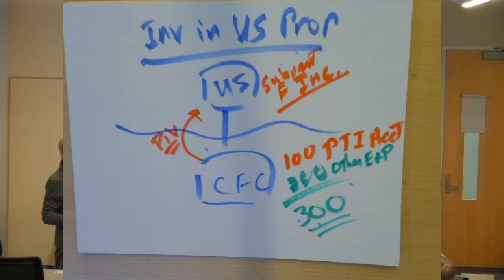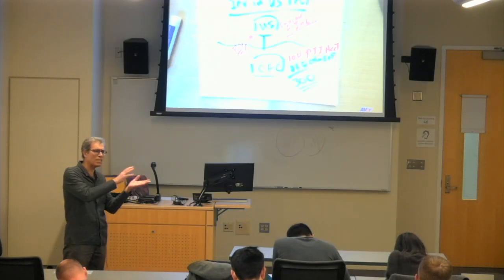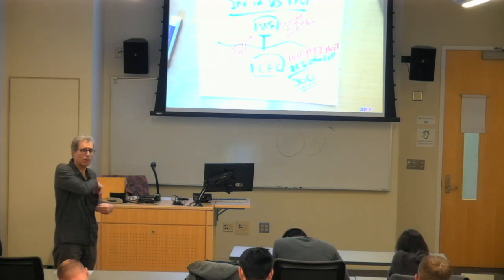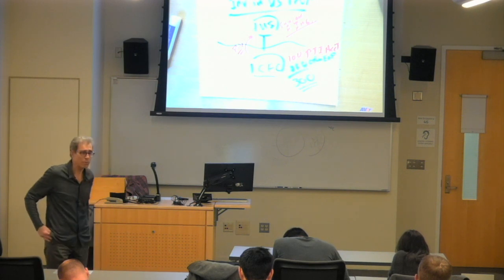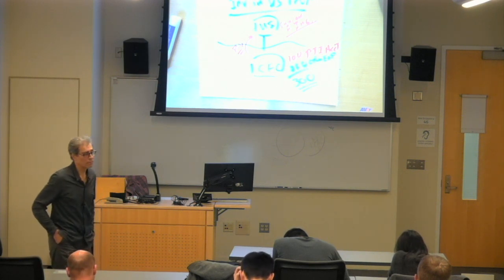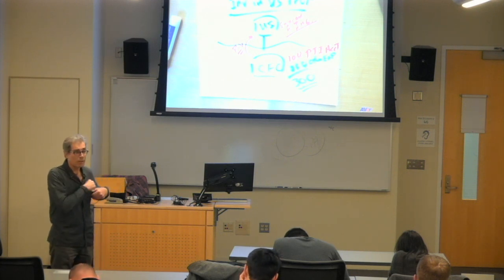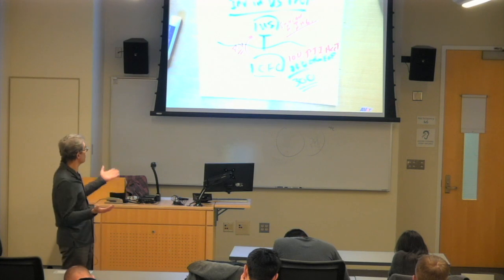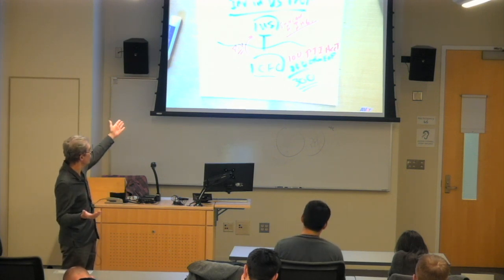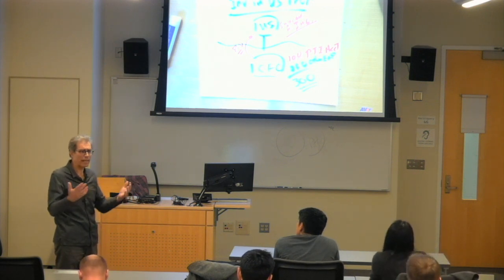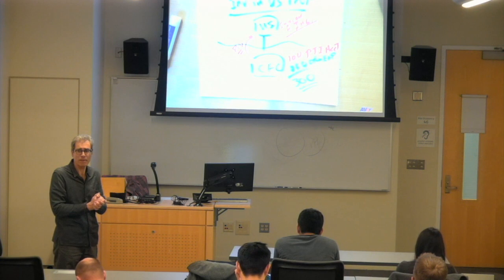For example, if the CFC made a loan to the U.S. parent, if the U.S. parent has the use of the money, isn't that sort of the equivalent of a dividend within this control group where it doesn't matter which pocket the money is in? So the rules say that if the CFC loans to the U.S. parent, that will be treated as a dividend and a subpart F inclusion, effectively.